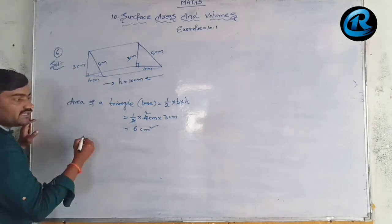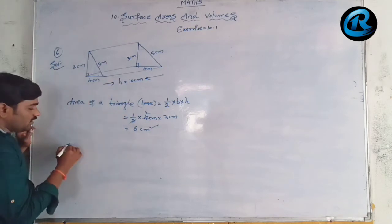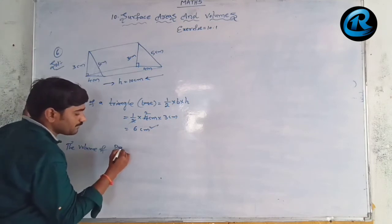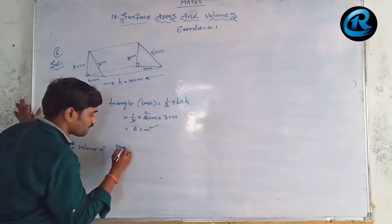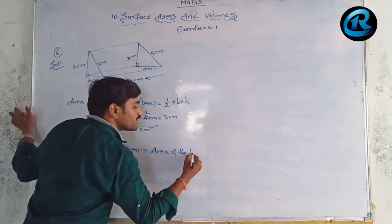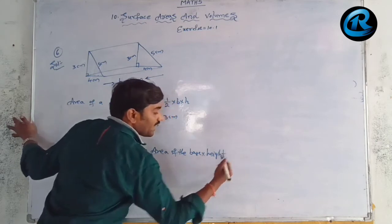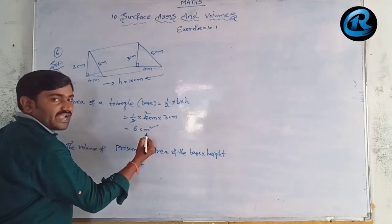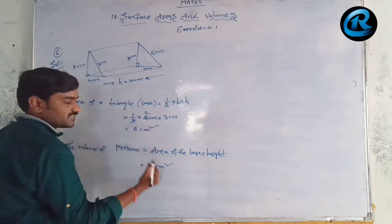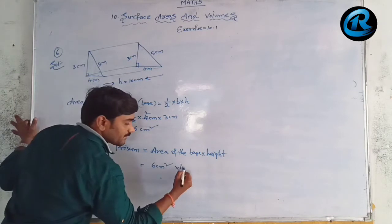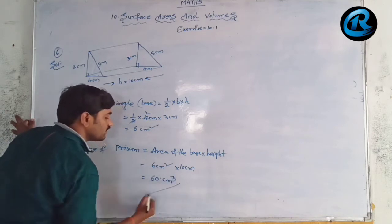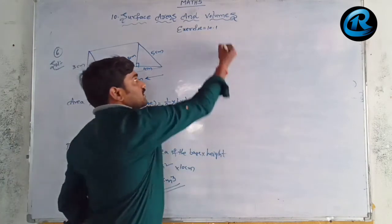Volume of prism = area of base × height = 6 cm² × 10 cm = 60 cm³. So the volume of the triangular prism is 60 cubic centimeters.